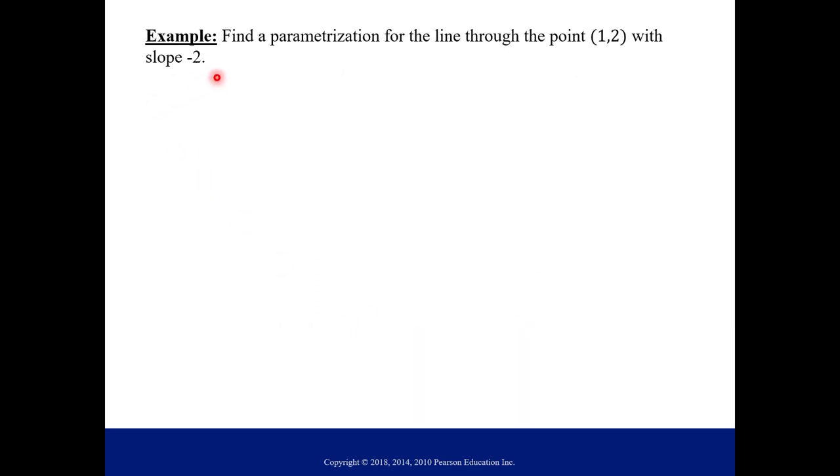Let's try this example. We are going to find a parameterization this time for a line through the point (1,2) with slope -2. This is new because I've been giving you the parameterizations. This time, we're finding it. Let's start with what we know about lines. This is our point-slope form of a line. Let's plug in our values. We know that y is 2, x is 1, and then our slope is -2. What you're going to do here is pick some possibility for t. We are going to let t equal x - 1. I'm choosing this quantity in the parentheses.